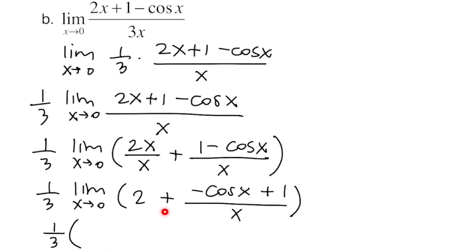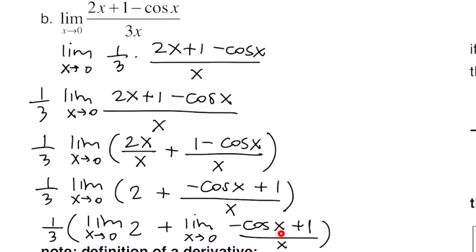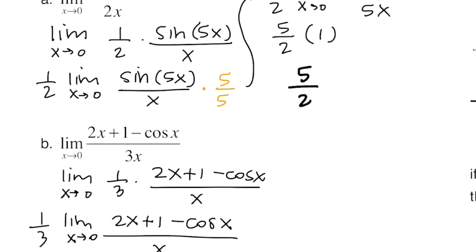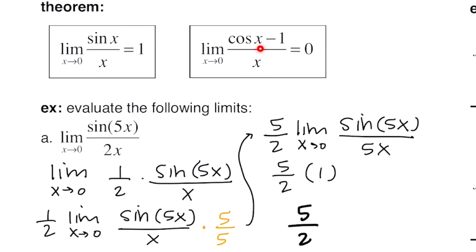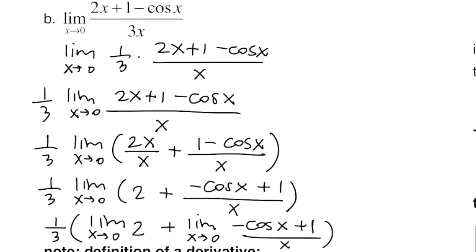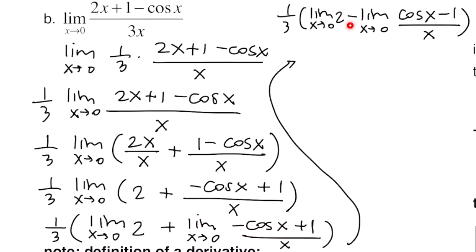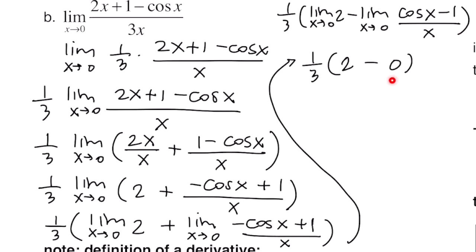At this point, you might notice this says negative cosine x plus 1, but to use the theorem we need cosine x minus 1. So we factor out a negative and move it to the front of the limit, giving us the limit as x goes to 0 of cosine of x minus 1 all over x. The limit of the constant equals 2, and the theorem gives us 0 for the trig part. So our final answer is 2/3.